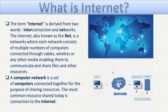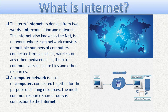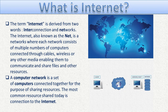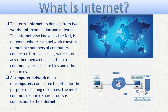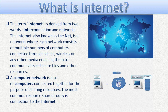The most common resource shared today is the connection to the internet. When two or more devices are interconnected with each other to communicate and share files, information and resources, it is called a network. A computer network is a collection of two or more computers interconnected with each other to communicate or share files and information.